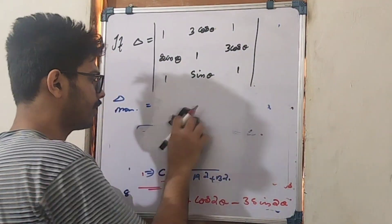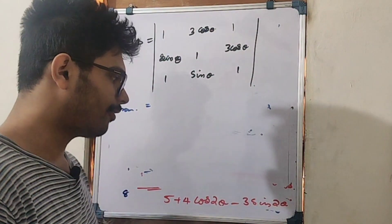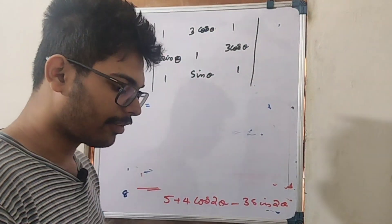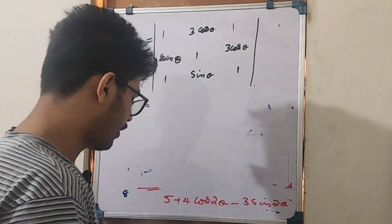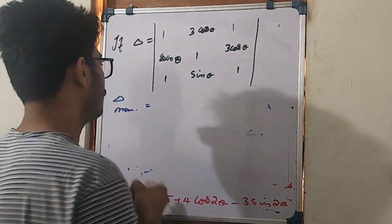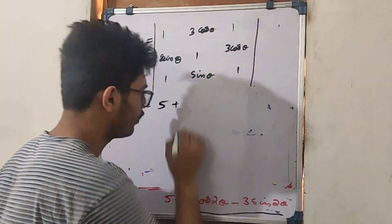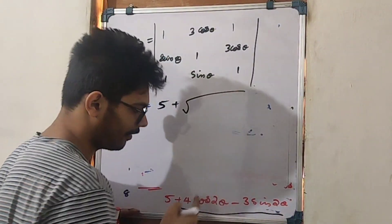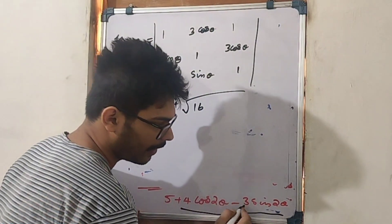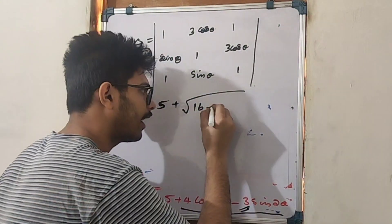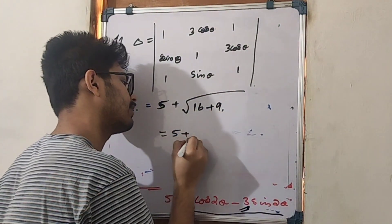Using the formula c ± √(a² + b²): here a² = 16 (since a=4) and b² = 9 (since b=−3), so √(16+9) = √25 = 5. Maximum value = 5 + 5 = 10, minimum value = 5 − 5 = 0.